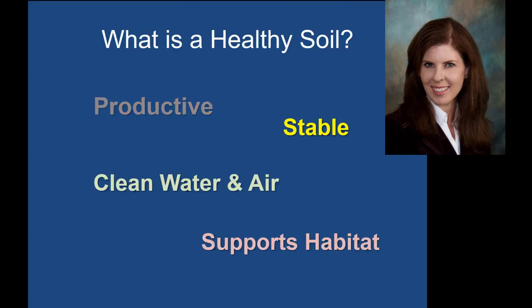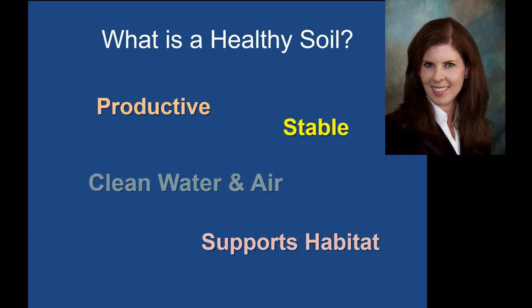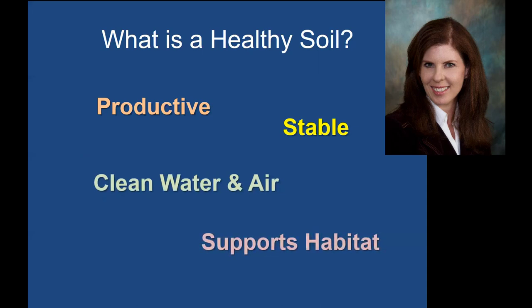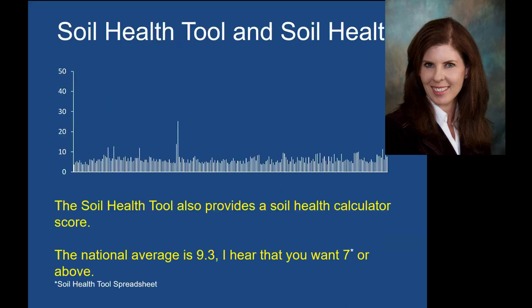I also wanted to look at the other aspect, which is the soil health score. When I think of healthy soils, I think about how productive they are, how stable they are, and how they help protect our water and air and support habitat. We ran the soil health score on all the different plots across multiple years. The national average is about 9.3, and the spreadsheet suggests you're really looking for a value of about seven or above. It really looks like our soils are not particularly in the healthy category by that measure.